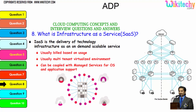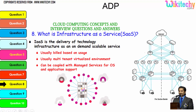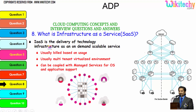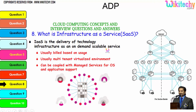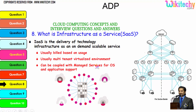Now let's talk about Infrastructure as a Service. You will be allocated with your server and whatever OS and software you want, you can install. IaaS is the delivery of technology infrastructure as an on-demand, scalable service, usually billed based on usage — typically multi-tenant virtualized, and can be coupled with managed services for OS and application support.